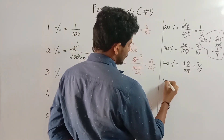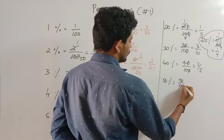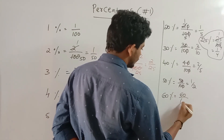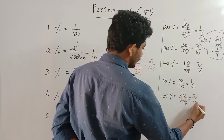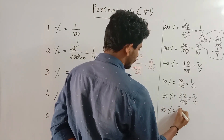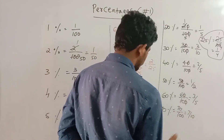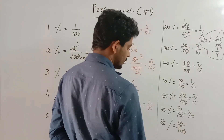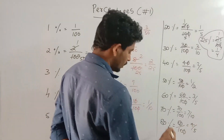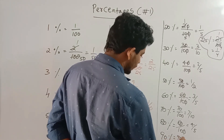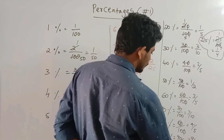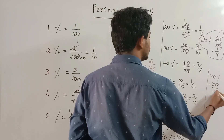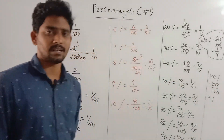Fifty percentage is 50 by 100, which equals 1 by 2. Sixty percentage is 60 by 100, which simplifies to 3 by 5. Seventy percentage is 70 by 100, which equals 7 by 10. Eighty percentage is 80 by 100, which simplifies to 4 by 5. Ninety percentage is 90 by 100, which equals 9 by 10. One hundred percentage is 100 by 100, which equals 1 — that is full, or complete.